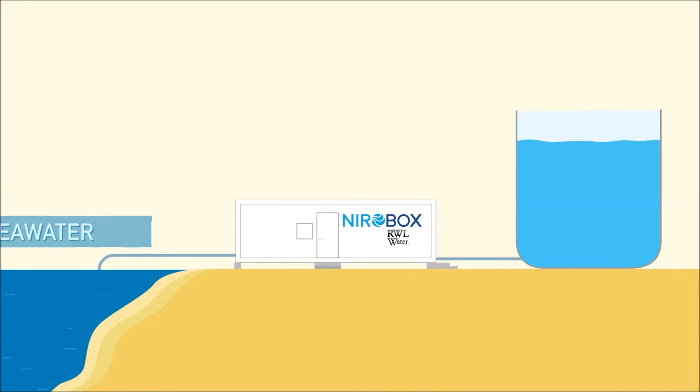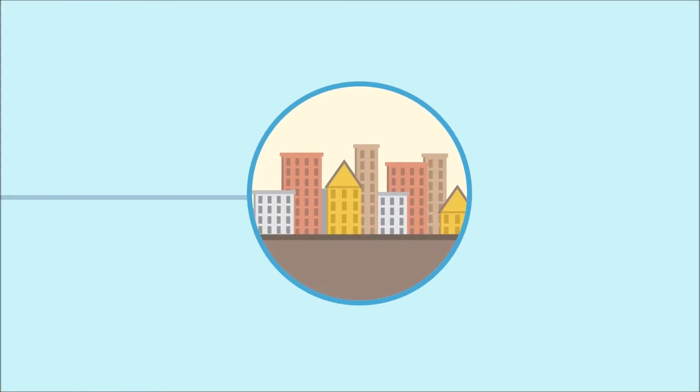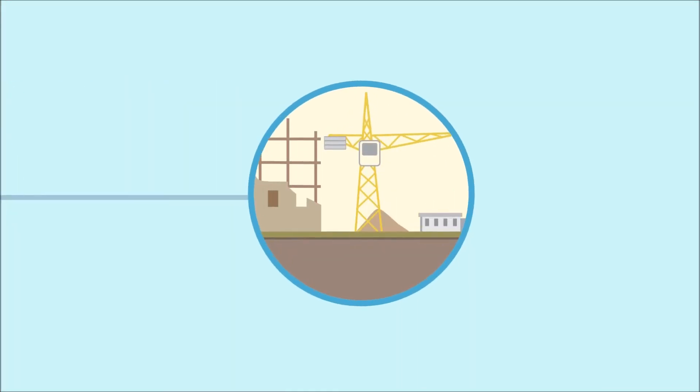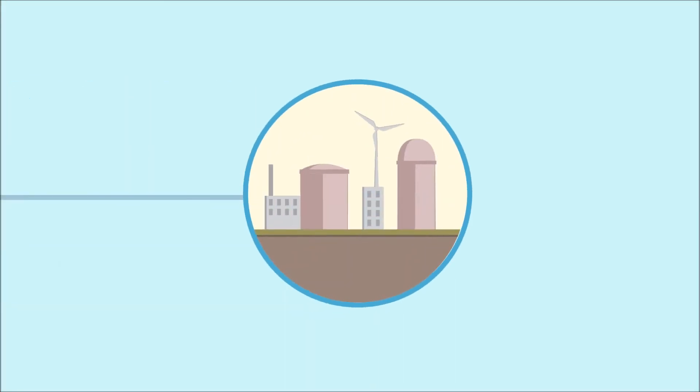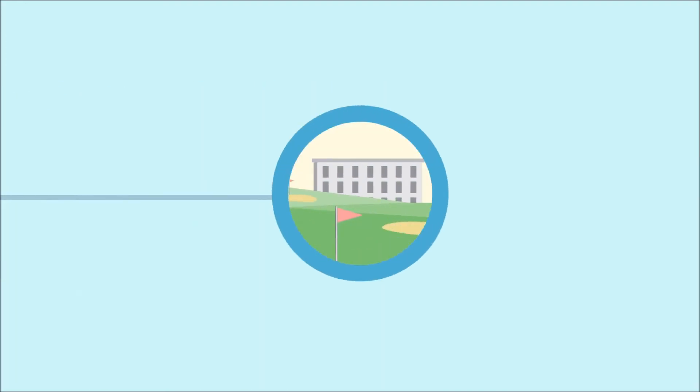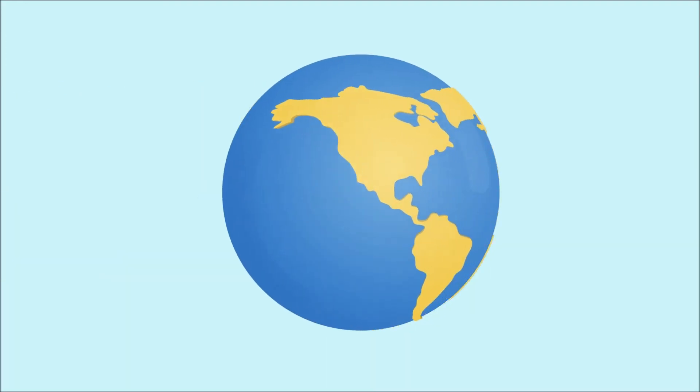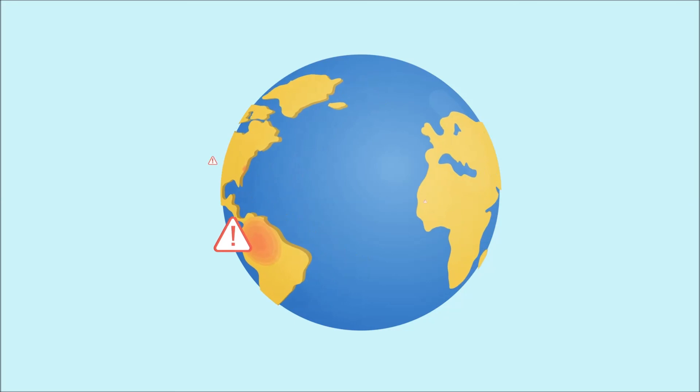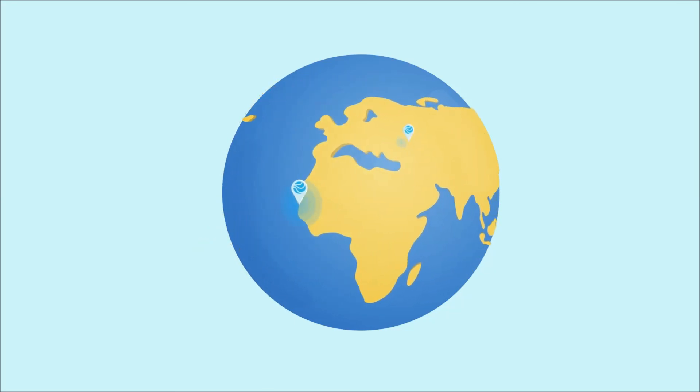NeroBox can turn seawater or brackish water into clean, usable water, affordably and efficiently for cities and communities, mining and construction camps, power and industrial plants, resorts and golf clubs. NeroBox can also be used for emergency relief in the wake of natural disasters.